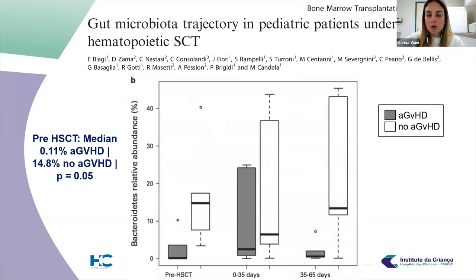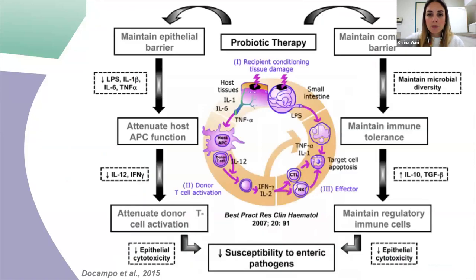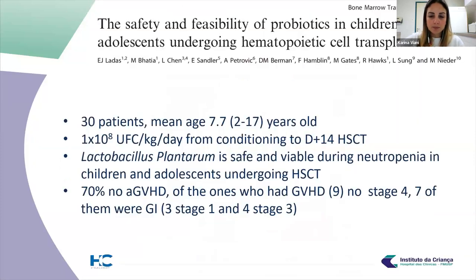One study looked at the abundance of a specific bacteria in the gut microbiota and found that even pre-transplant, patients who later developed acute GVHD had a lower abundance of that bacteria than those who did not — and that was statistically significant. This makes us think that probiotic therapy pre-transplant may act as prophylaxis for acute GVHD, mainly by maintaining the epithelial barrier and local beneficial microbiota in the intestine.